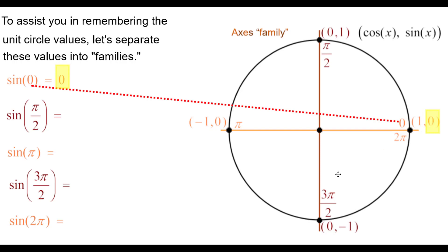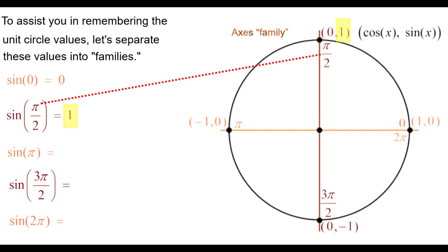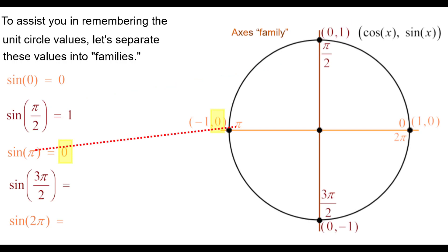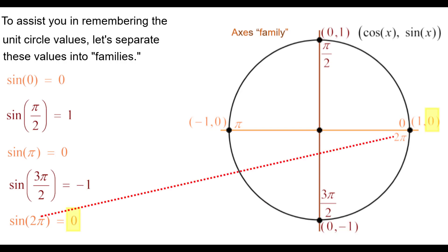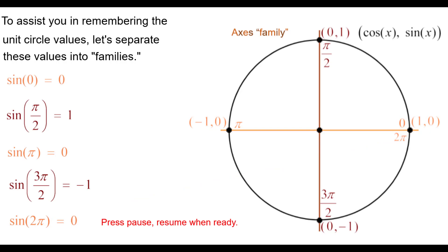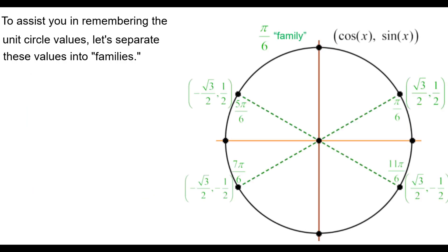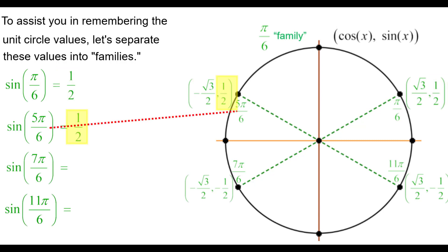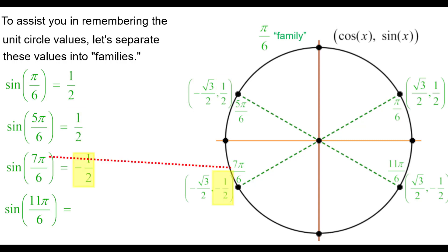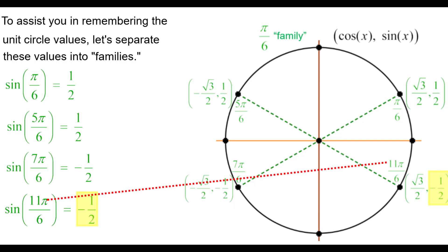The sine of 0 is 0 — that's the second coordinate of the point at 0. The sine of π/2 is 1. The sine of π is 0. The sine of 3π/2 is negative 1. The sine of 2π goes back to 0. Now the π/6 family: the sine of π/6 is positive 1/2, as is the sine of 5π/6. The sine of 7π/6 in the third quadrant is negative 1/2, and the sine of 11π/6 is also negative 1/2 in the fourth quadrant.